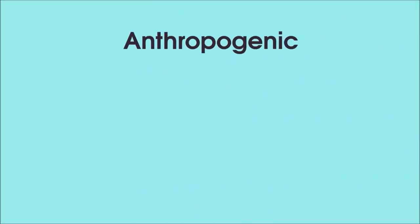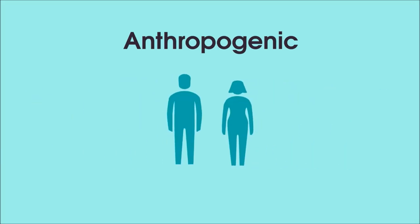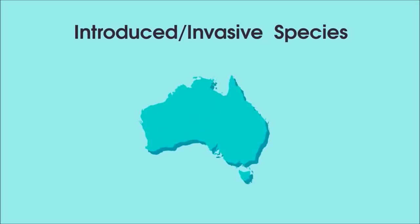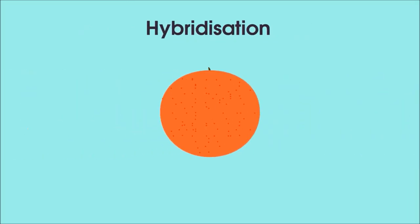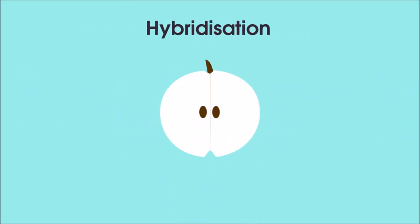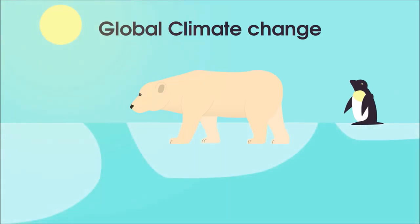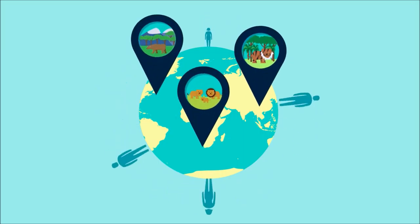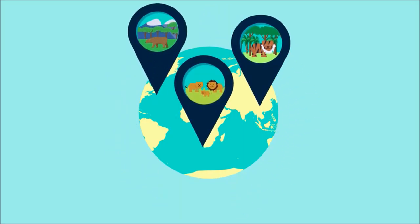There are many proposed reasons for the current drop in biodiversity. Some of those reasons are anthropogenic, meaning caused by humans. Anthropogenic factors include things like introduced or invasive species, such as the introduction of rabbits to Australia, human-induced hybridization such as in plants to create optimal species of crop, over-harvesting of resources, and global climate change caused by human activities. While humans aren't responsible for all of the current extinction events, there is good evidence to suggest that humans are affecting the world on a global scale and causing the loss of many important species.